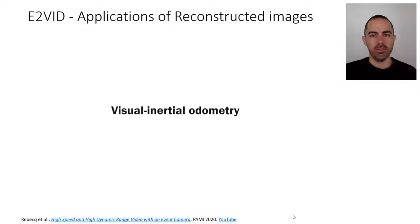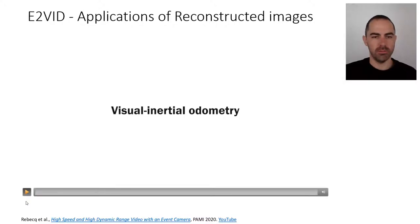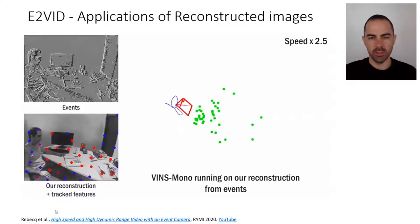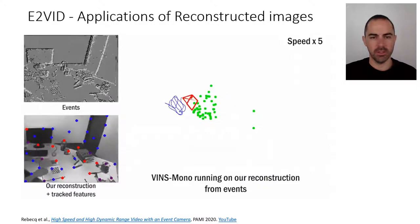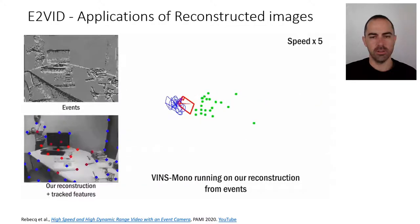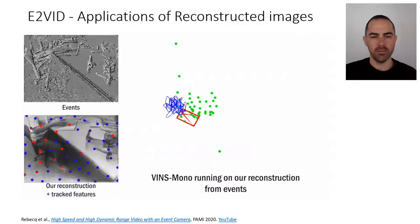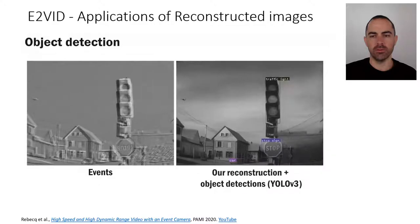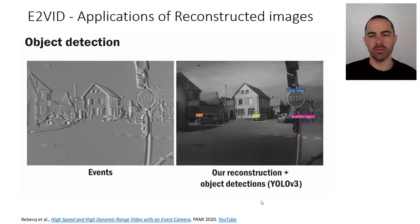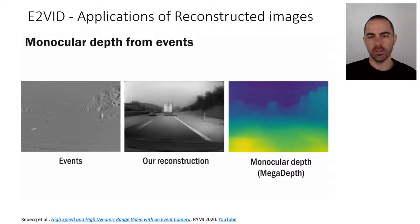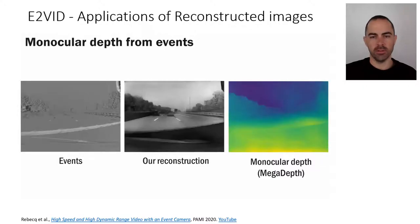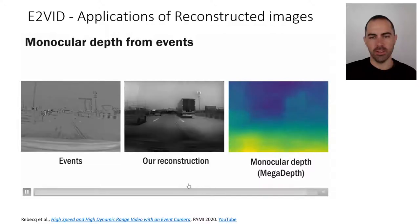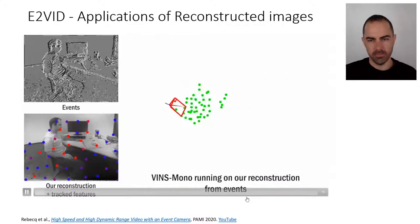Let's look at some applications of these reconstructed images. One is visual-inertial odometry: from events we obtain reconstructed images, then pass them to off-the-shelf algorithms such as VINS-Mono to run visual-inertial odometry using the camera's IMU, with results competitive with the state of the art. You can also run an object detector such as YOLOv3 on the reconstructed images — it detects cars and sign signals. Another network can perform monocular depth estimation, showing that there is a lot of information in the event stream.